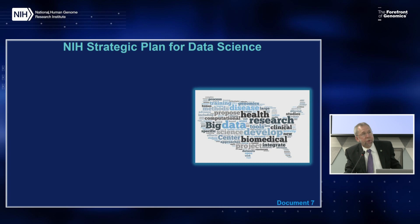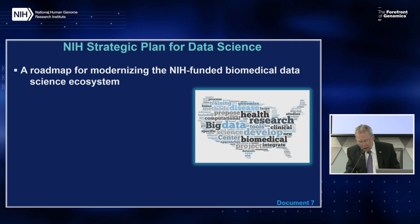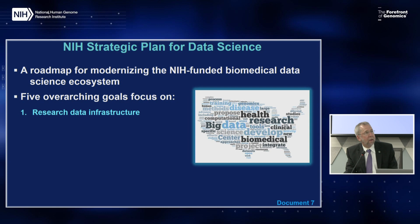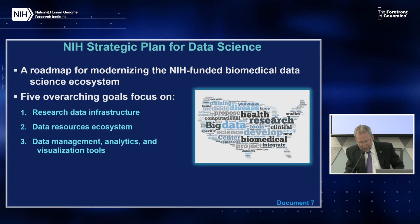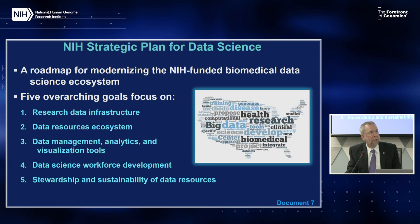The NIH Strategic Plan for Data Science, requested by the U.S. Congress, was published in June. This important document aims to provide a roadmap for modernizing the NIH-funded biomedical data science ecosystem. The plan includes five overarching goals: establishing modern research data infrastructure, modernizing the data resources ecosystem, supporting development of advanced data management and analytics tools, enhancing data science workforce development, and enacting appropriate policies to promote stewardship and sustainability of data resources. Working groups across NIH have begun discussing implementation tactics, and further updates will be provided at future council meetings.